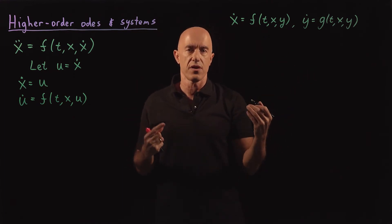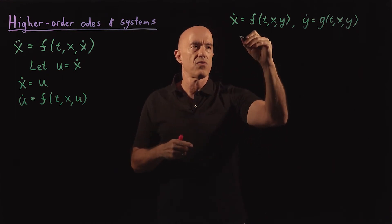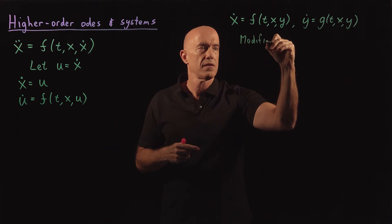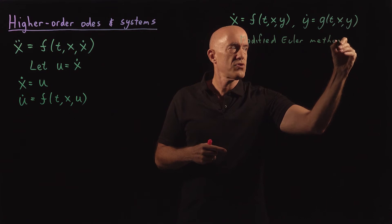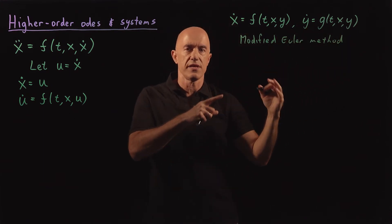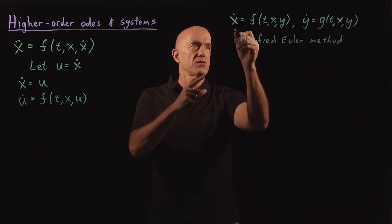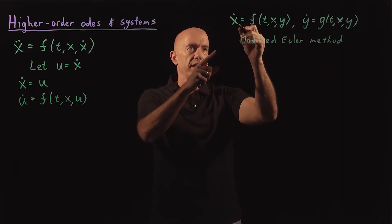We can use a second-order Runge-Kutta method, say the modified Euler method. So we'll integrate using the modified Euler method. And the trick here is that you have to integrate these two first-order ODEs in parallel.